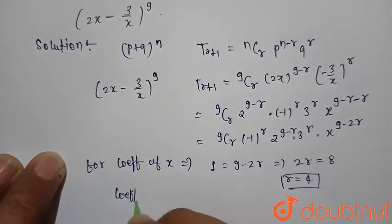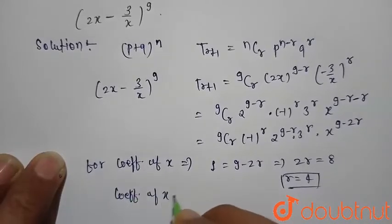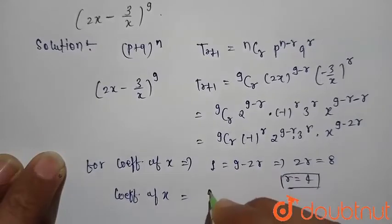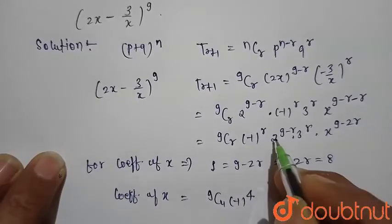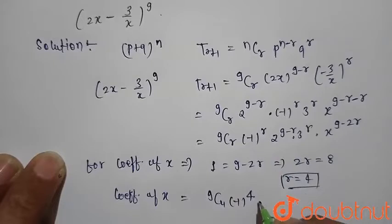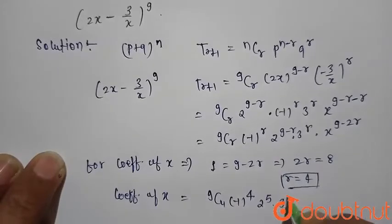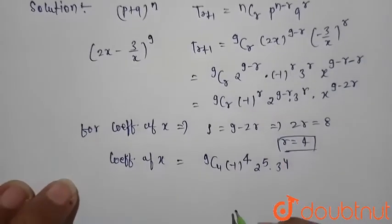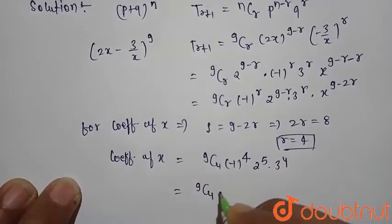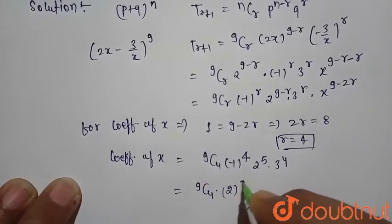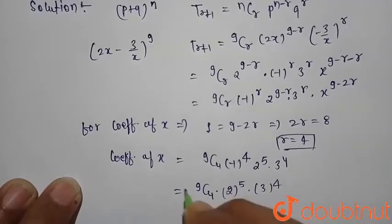Now we find the coefficient of x^1. This is equal to 9C4 × (−1)^4 × 2^(9−4) × 3^4, which is 9C4 × 2^5 × 3^4. We calculate this to get our answer.